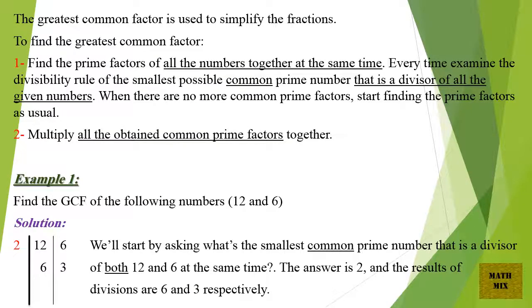The greatest common factor is used to simplify fractions. To find the GCF: first, find the prime factors of all the numbers together at the same time, examining the divisibility rule of the smallest possible common prime number that divides all the given numbers. When there are no more common prime factors, start finding the prime factors as usual. Then multiply all the obtained common prime factors together.